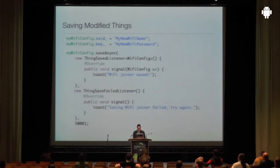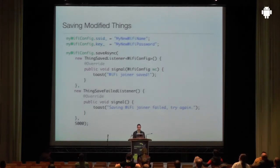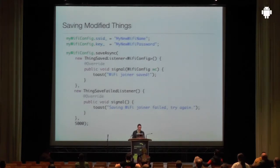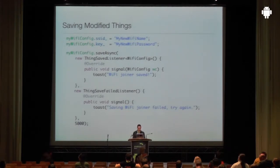You can also modify things. Since a thing is always uniquely associated with a tag, you modify it by assigning new values to its fields — for example assigning a new SSID and key to an existing WifiConfig. Then you manually call saveAsync(), which is similar to the initialize method on an empty record. It takes two listeners — one for success, one triggered if Morena was unable to persist the WifiConfig to the tag within the defined timeout. This method is asynchronous, automatically scheduled on another thread, and fault-tolerant.